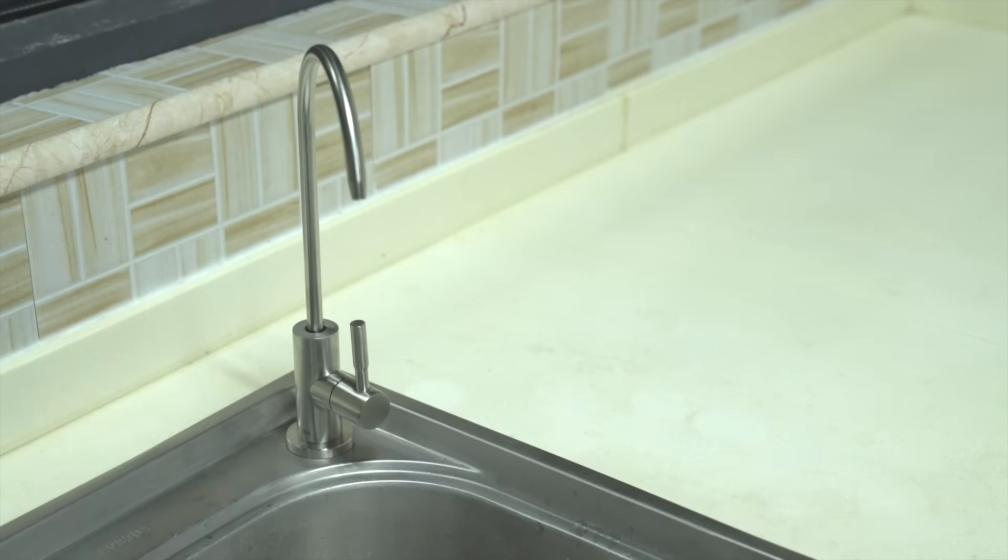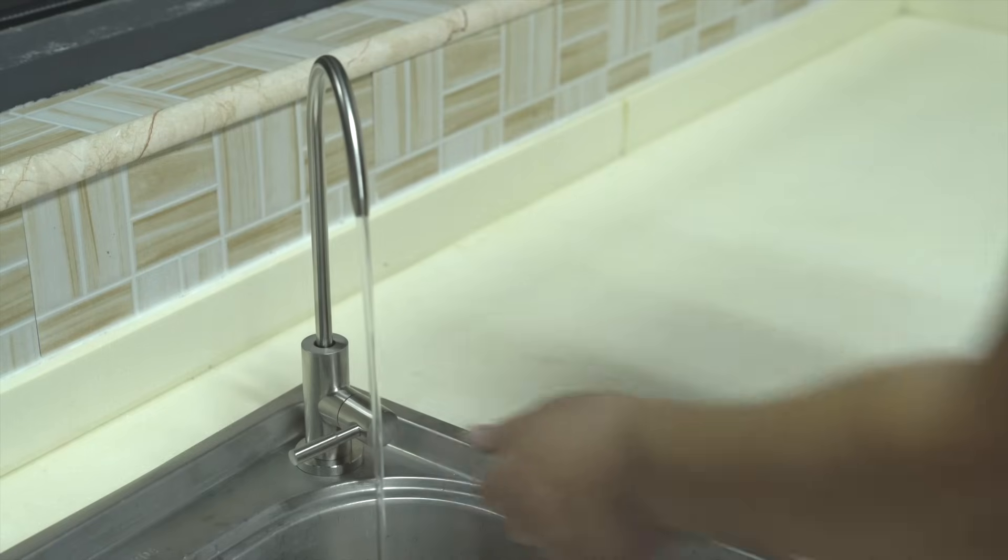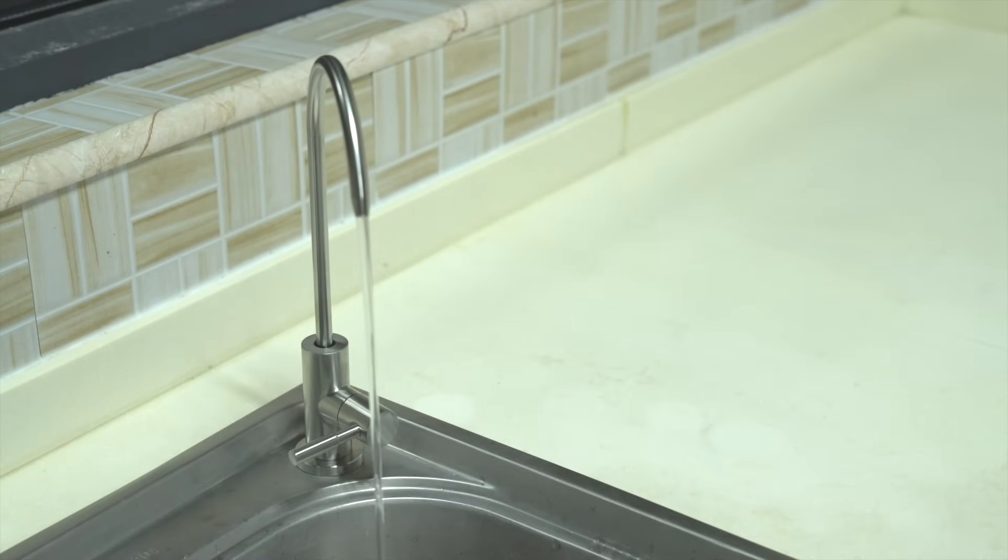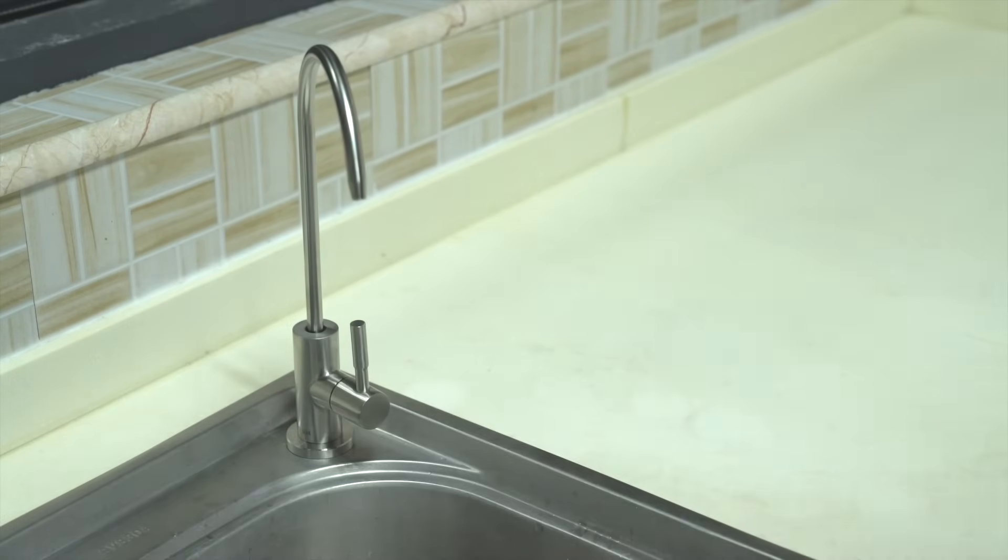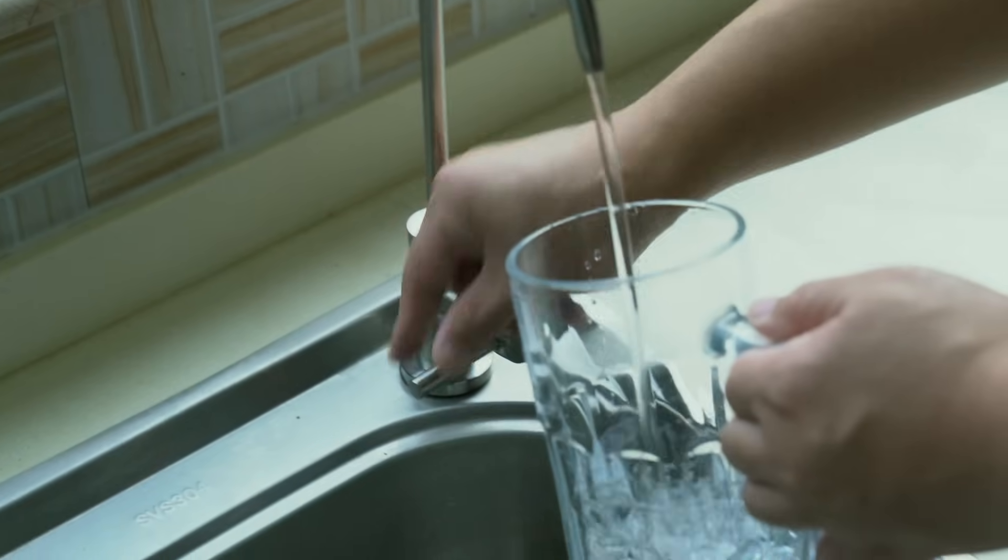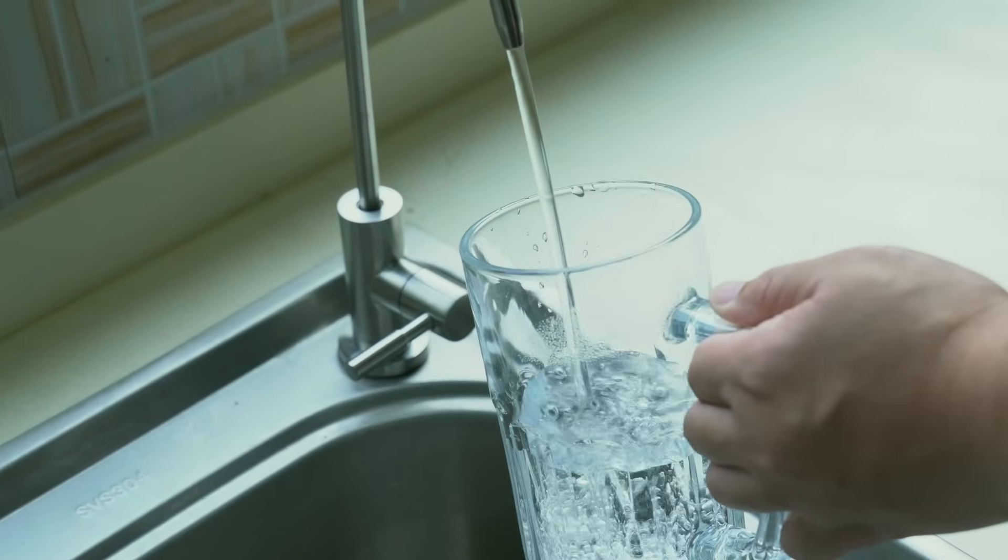Now, close the sink faucet and allow the pressure tank to refill. After two hours, open the sink faucet and allow the pressure tank to drain once again. After a few minutes, the water from the faucet will get noticeably less. Close the sink faucet and allow the pressure tank to refill for at least one hour. The water purifier has now been rinsed and is safe for use.